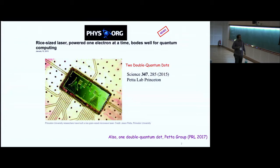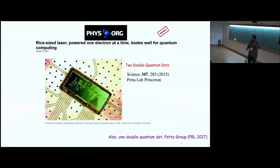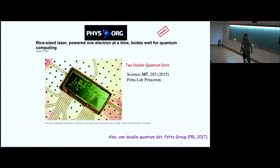A few years ago, it was shown that quantum dots as units can help produce a laser in the microwave regime — what was called a 'rice grain laser' — just from electronic quantum transport. They initially used two double-quantum-dot units for gain, and recently managed to do it with one double-quantum-dot unit.